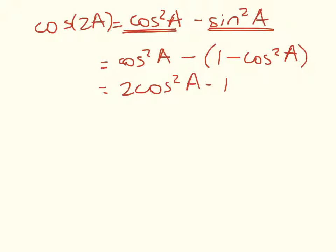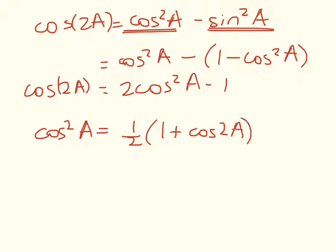So we've got that cos of 2A is equal to that. Now, the other way we can write that is that cos squared of A is equal to 1 half of 1 plus cos of 2A. Right, on the next slide I'm just going to do a summary of what we've got out about the double angle formula.